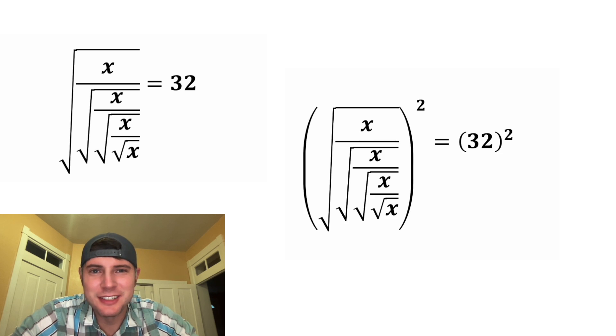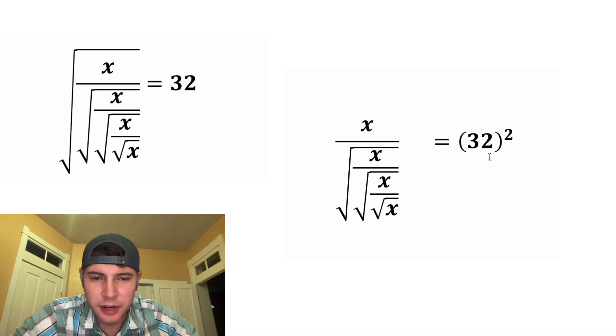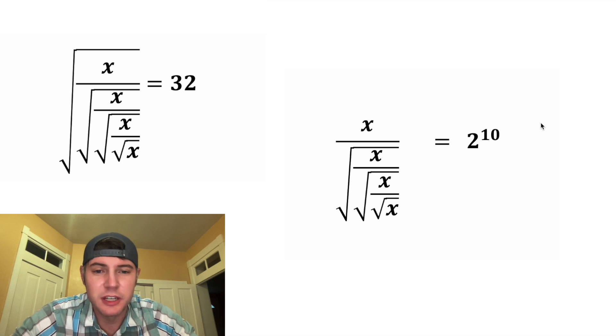For the first step, let's square both sides. On the left-hand side, the square and the square root will cancel each other out. On the right-hand side, I don't really want to do 32 squared, but we can change this 32 into 2 to the 5th. And now to do 2 to the 5th squared, we just multiply the 5 times the 2 to get 2 to the 10.